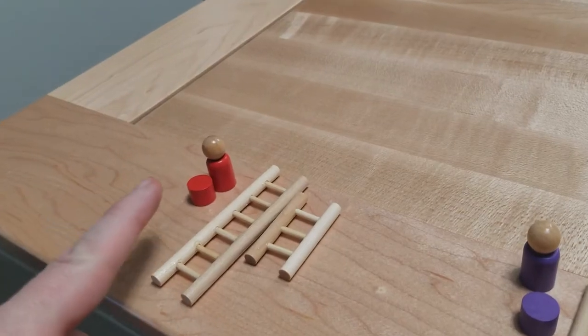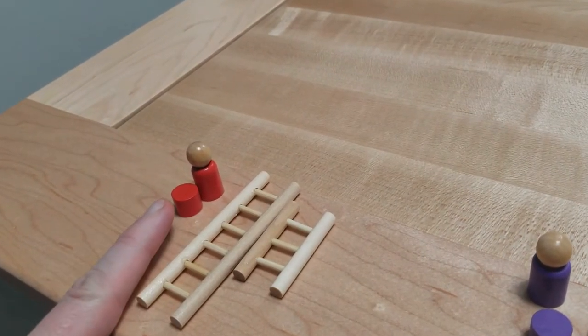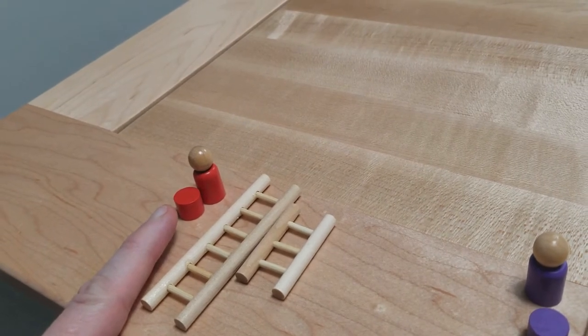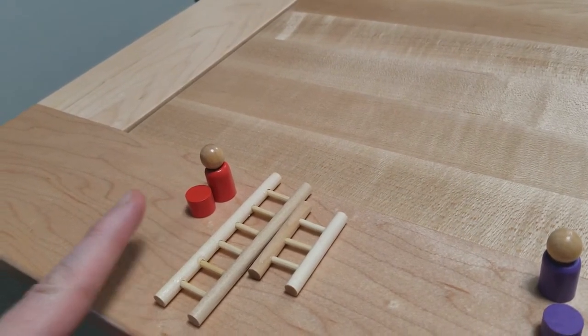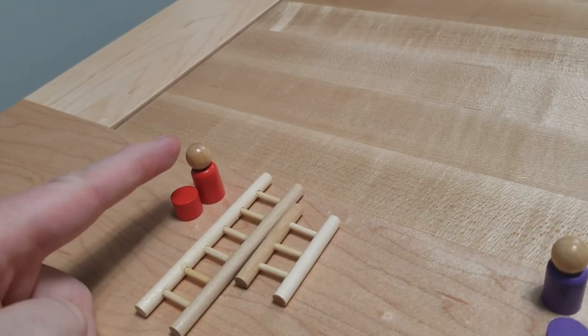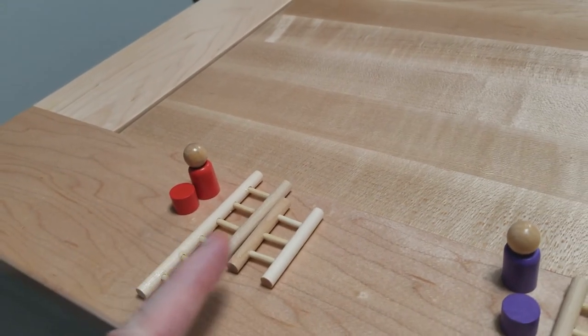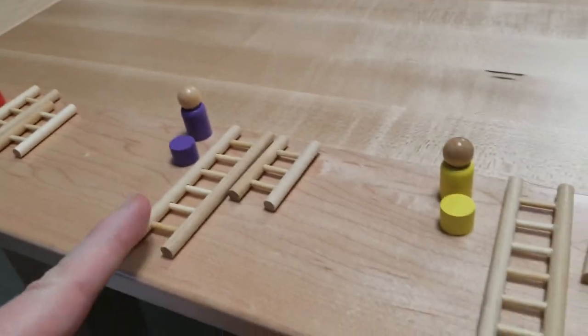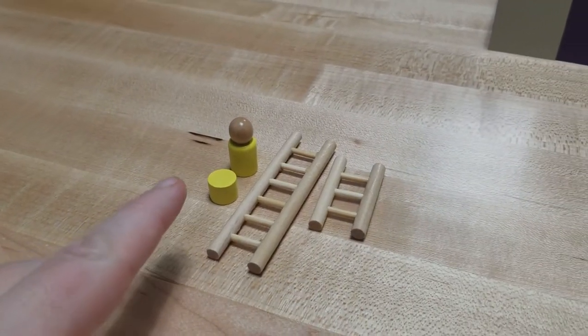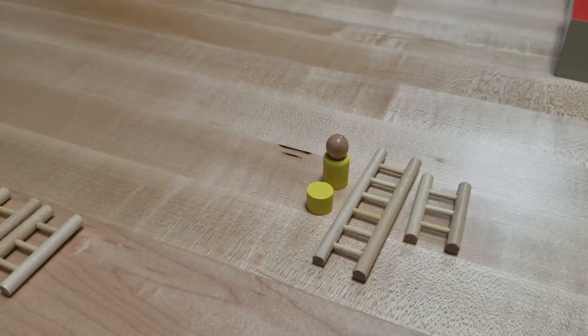Next, you'll randomly assign the pawn color after all the blocks are placed. And then each player will get a complete set of a pawn, a blocking marker, a small ladder, and a big ladder. Randomly select a start player and now play will proceed clockwise.